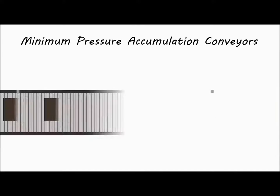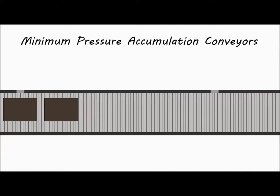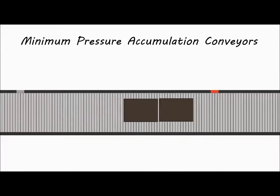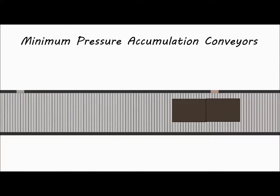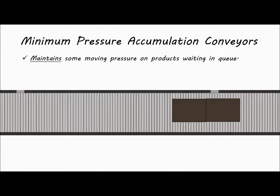Minimum pressure accumulation conveyors allow for light contact between products when the system signals that queue to accumulate. Unlike zero pressure accumulation conveyors, this type of conveyor maintains a light but constant dry force on products waiting in accumulation. These conveyors are typically belt-driven roller or modular plastic conveyor belts.